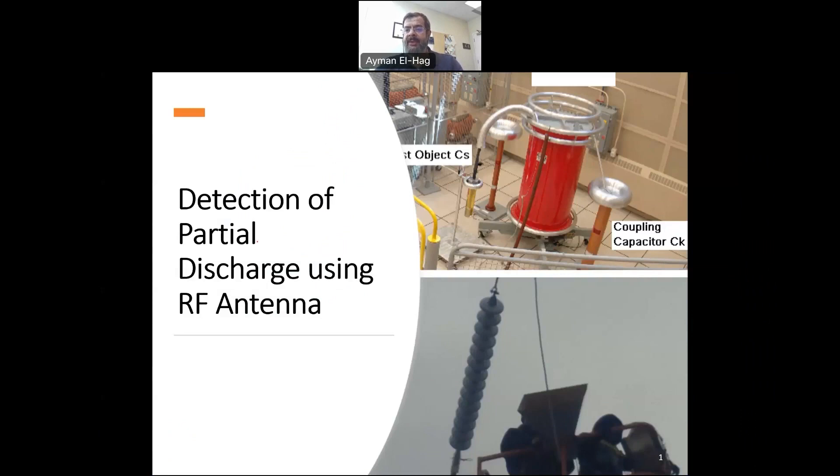In a recent video, I talked about how we can detect partial discharge using the classical PD setup with some demo. Now this technique is very sensitive, and we would see in the demonstration after this short presentation that the classical PD setup is much more sensitive than the RF antenna to detect partial discharge.